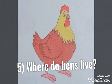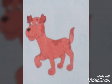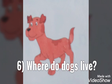Fifth question — today we learnt this question. Where do hens live? Hens live in a coop. All answer with me: Where do hens live? Hens live in a coop. Then last question: Where do dogs live? Dogs live in a kennel. All say: Dogs live in a kennel.